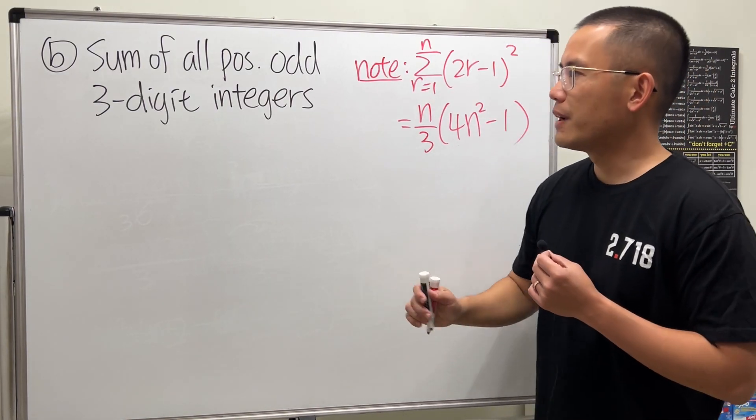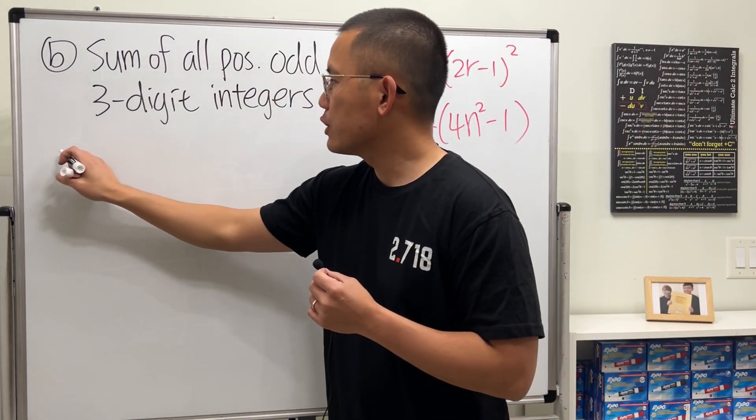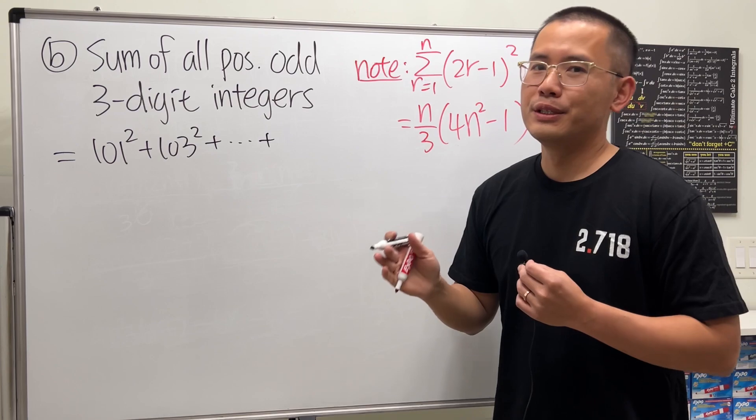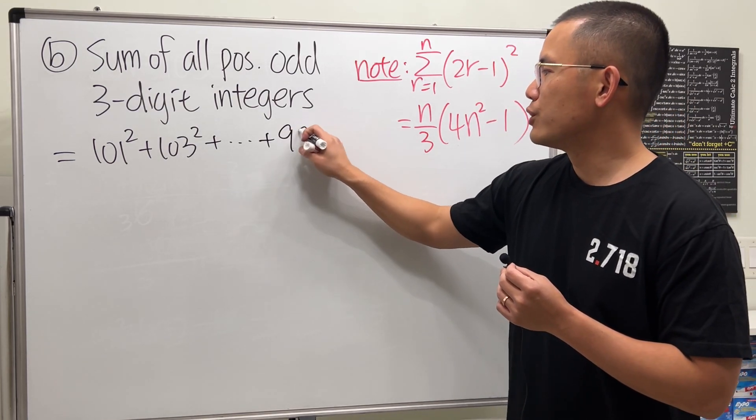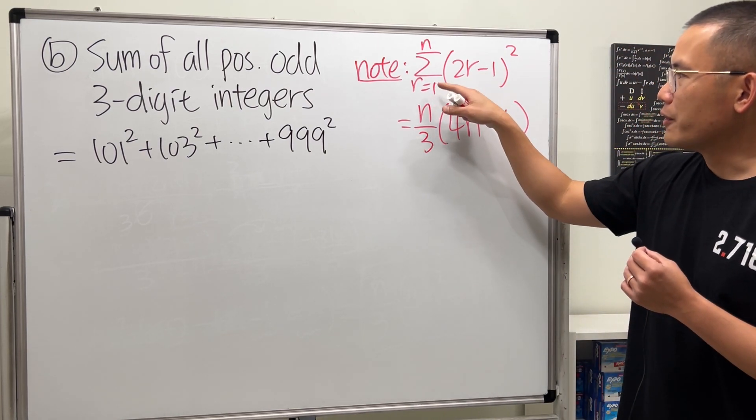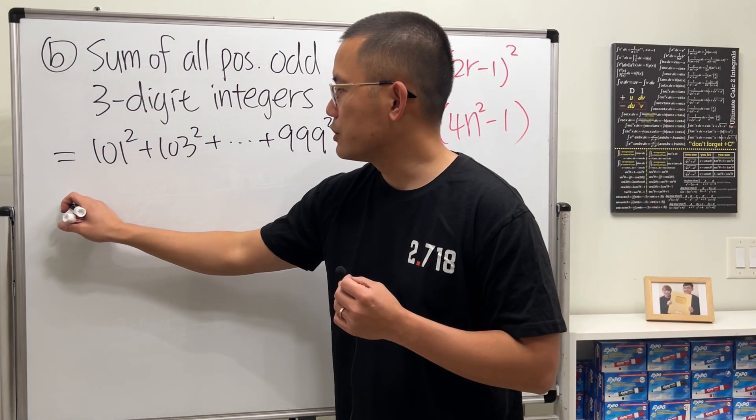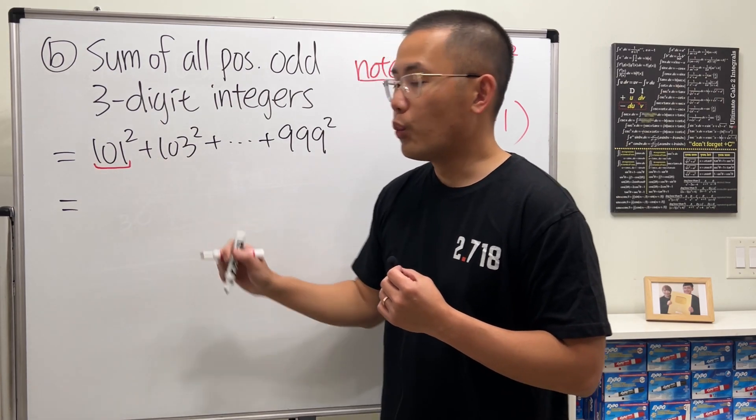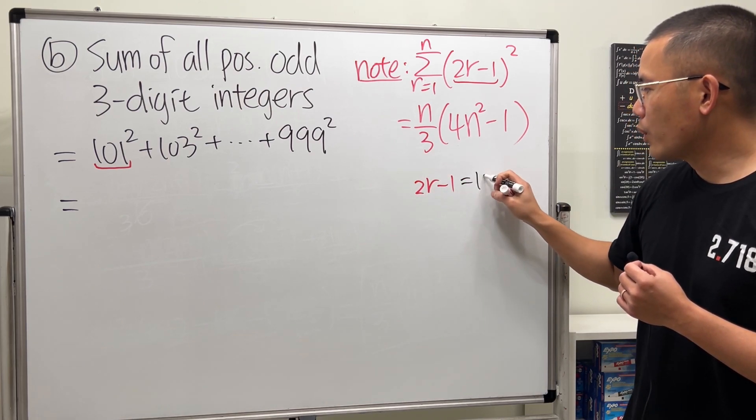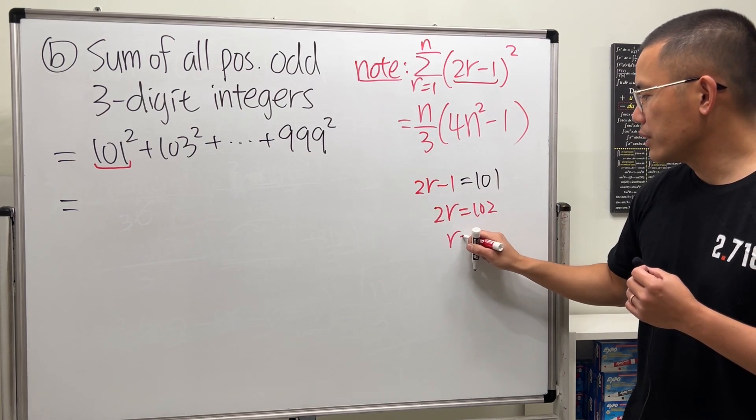Now, for part B, we will have to find the sum of all positive odd 3-digit integers. So, in another word, we are trying to get 101 squared plus 103 squared, and so on. And the last 3-digit integer that's also odd is 999 squared. And earlier, we have a summation for the sum of the first n odd squares. So, we can just utilize this. Now, let's just work with summations. Firstly, this is 101. And let's match with this inside here. So, if you do 2r minus 1, if you make that equal to 101, solve it, you will get 2r is equal to 102 divided by 2, you get 51.